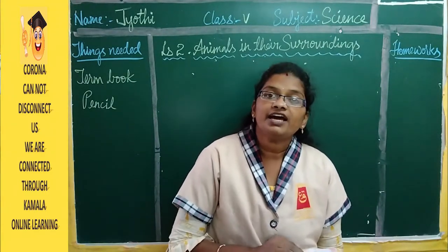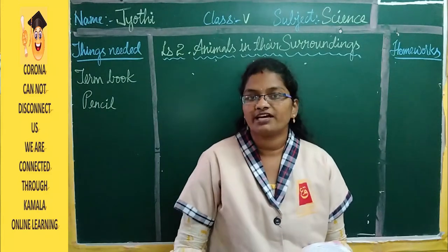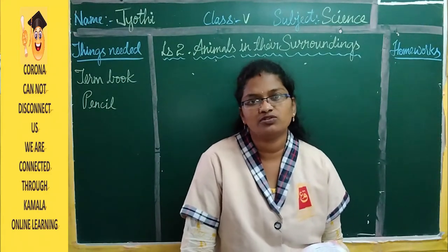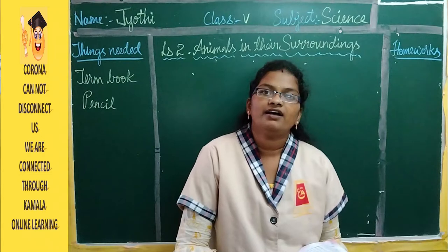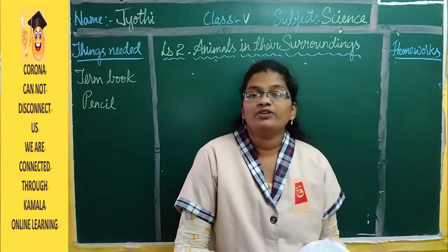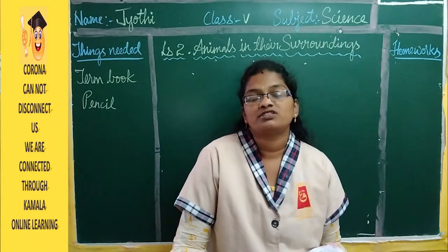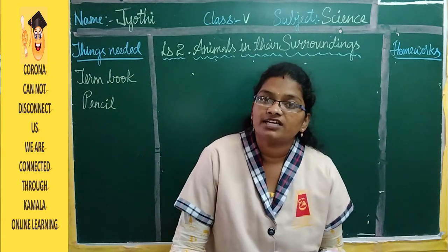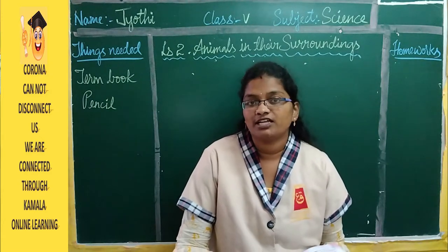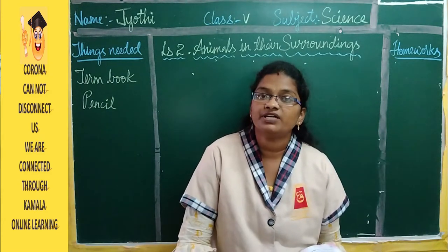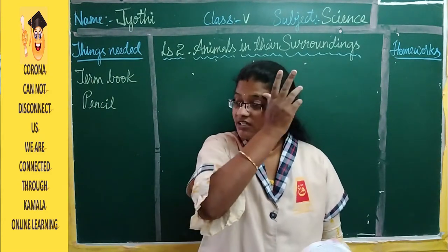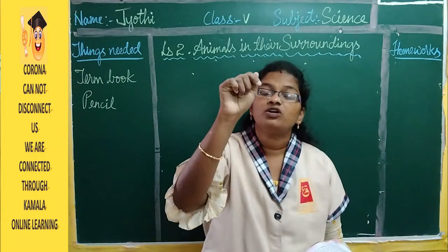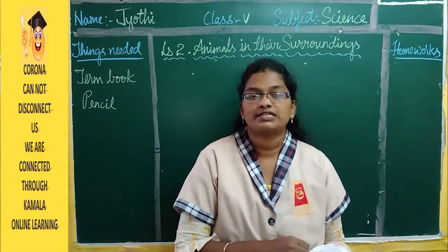The eating habits of animals include herbivores, carnivores, and omnivores. Herbivores eat plants. Carnivores eat the flesh of other animals, and some birds eat flesh using their hooked beak and claws.